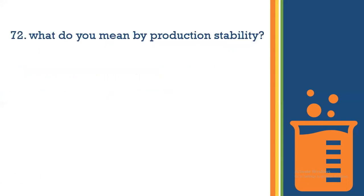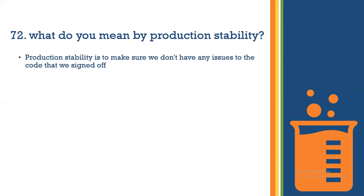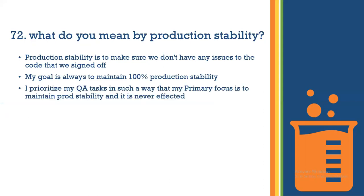What do you mean by production stability? Production stability means making sure we don't have any issues with the code that we signed off — meaning we confirmed there are no defects. My goal as a test engineer is to always maintain 100% production stability. For that, I prioritize my QA tasks in such a way that my primary focus is to maintain production stability so it is never affected.